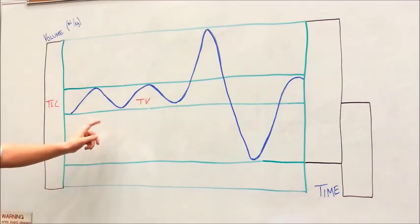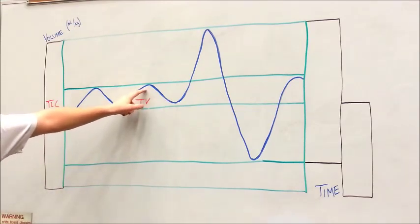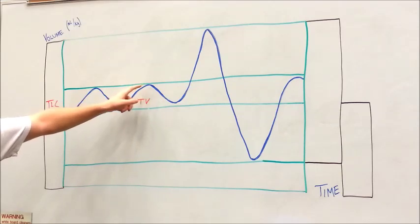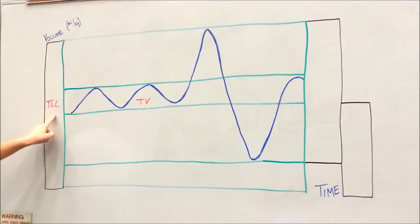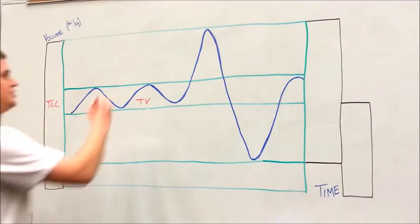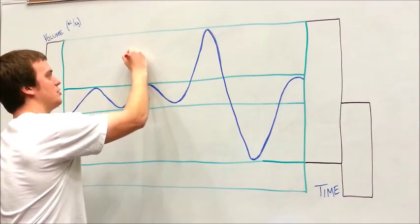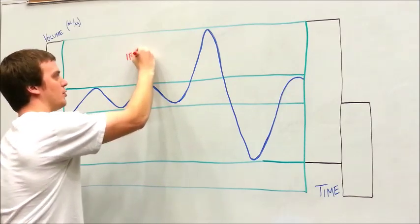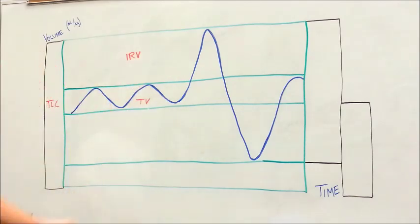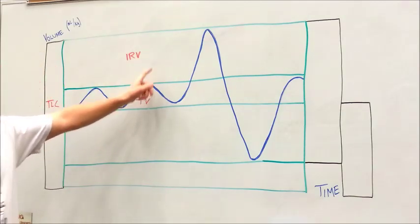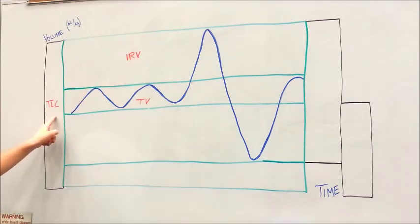The difference in volume between the maximum of tidal volume, or while you're inspiring or breathing in during tidal volume, and the absolute maximum of total lung capacity is known as your inspiratory reserve volume, or IRV. Again, this is the difference between the maximum of tidal volume and the maximum of total lung capacity.